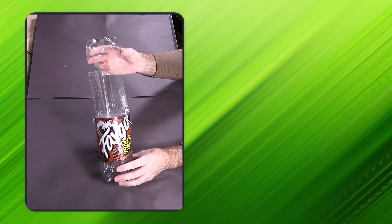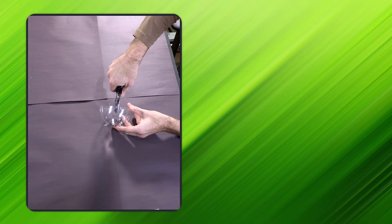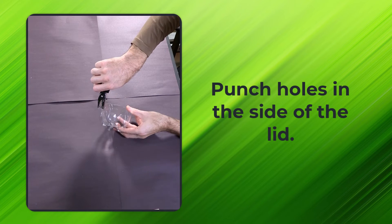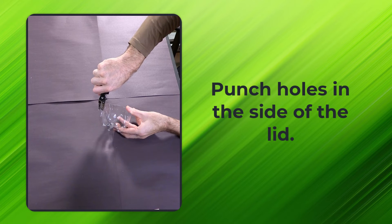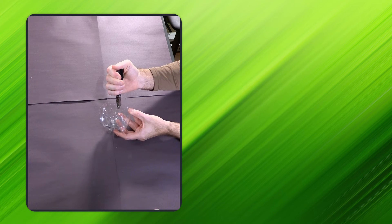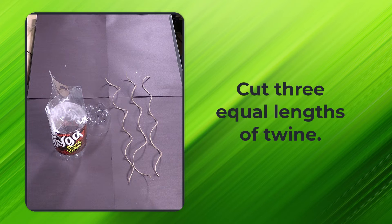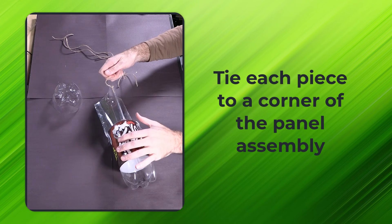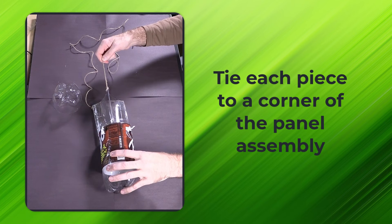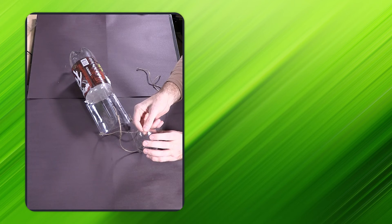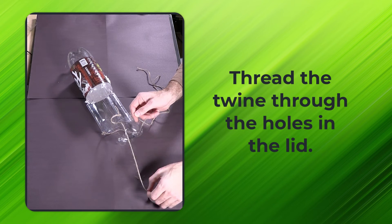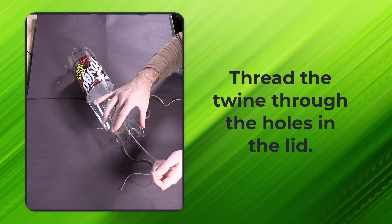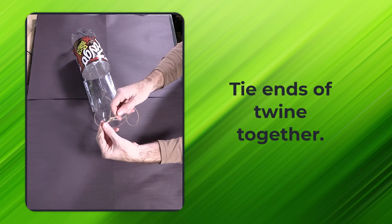Now we'll attach a lid. Once again, use your hole puncher to punch holes on the side of the lid aligned with the spacing of the holes on the panel assembly. Then cut equal lengths of twine and tie each piece to one of the holes on your panel assembly. Now just thread the twine through the holes that you just made on the lid and finish off by tying the ends of the twine together.